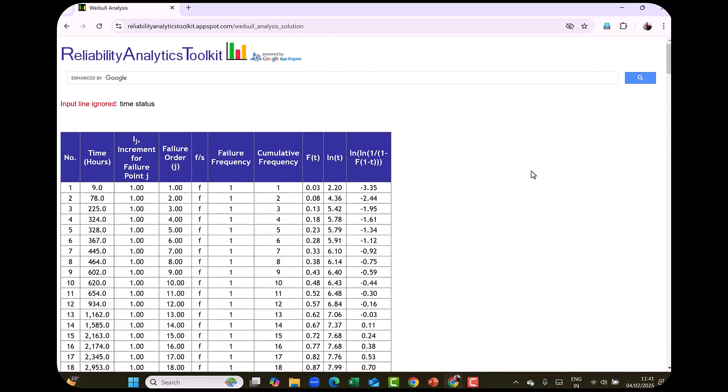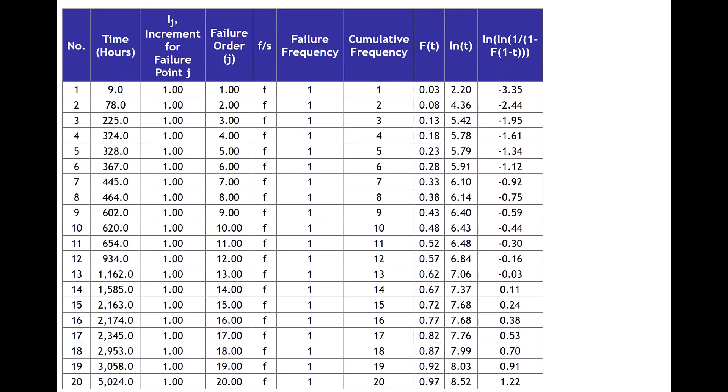And you will see the increment table which shows, which has sorted the data in ascending order from 9 to 5024, the 20 failures. The increment for failure mode 1, 1, 1. The failure order. And then whether failed or survived. Failure frequency is 1. Cumulative frequency 1 to 20. Capital F(t) is the median rank actually. That it has already calculated. Then ln of time t and the plotting positions.